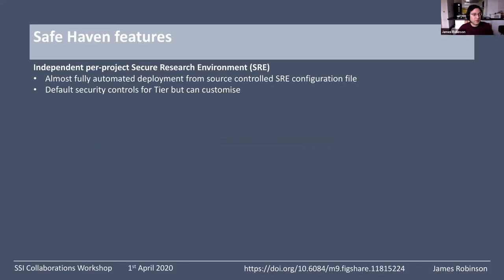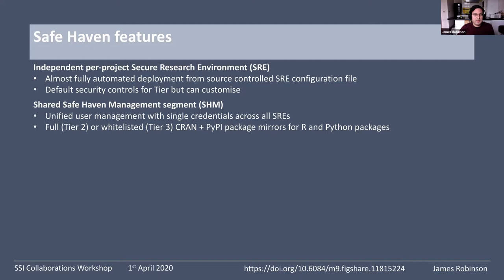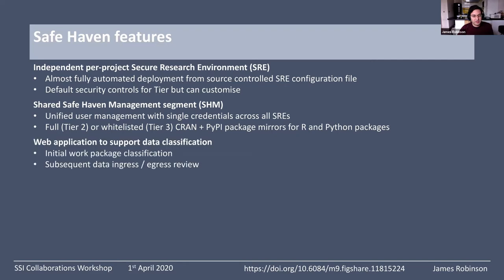Our reference implementation is on Microsoft Azure. For each work package, we spin up a secure research environment — a deployment from a source-controlled configuration file that is almost completely automated, with just a little human in the loop. There are some default security controls, but you can customize them if needed. Several different secure research environments can share a single safe haven management layer, which controls user creation, credentials, and multi-factor authentication for those users, and is also where the package mirrors live — one set of tier two mirrors, one set of tier three, and so on.